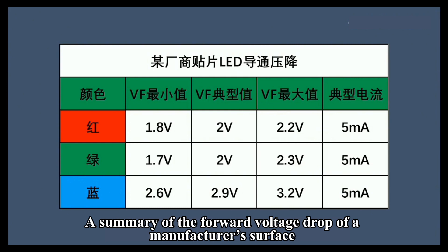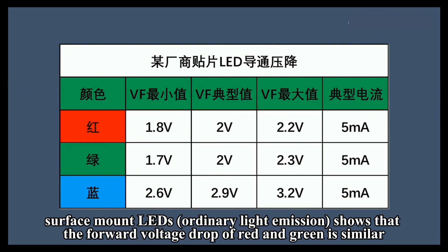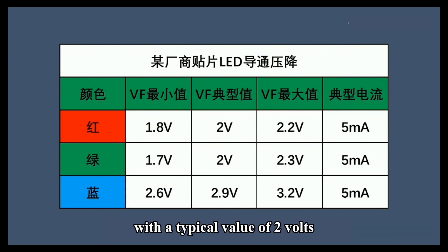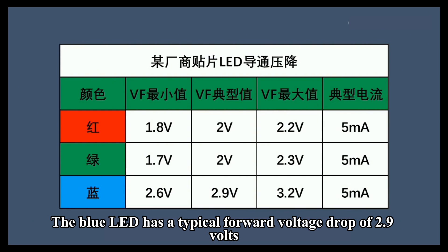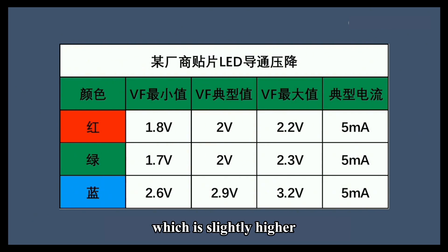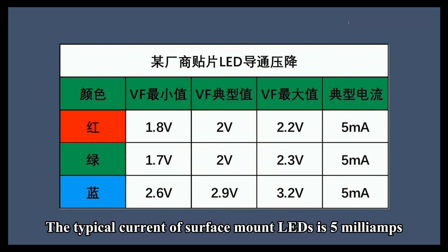A summary of the forward voltage drop of a manufacturer's surface mount LEDs, for ordinary light emission, shows that the forward voltage drop of red and green is similar, with a typical value of 2 volts. The blue LED has a typical forward voltage drop of 2.9 volts, which is slightly higher. The typical current of surface mount LEDs is 5 milliamps.